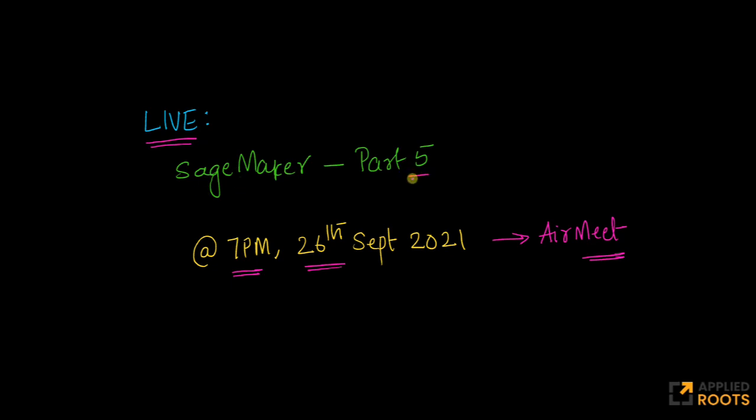This is part five of a series of live sessions on AWS SageMaker, which is a cloud-based machine learning platform for end-to-end machine learning, everything from data cleaning and labeling to ML Ops and ML productionization.